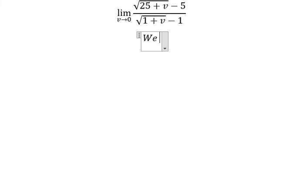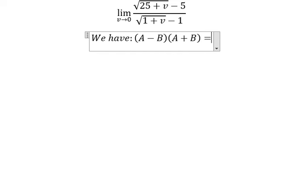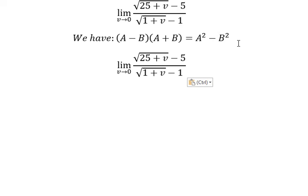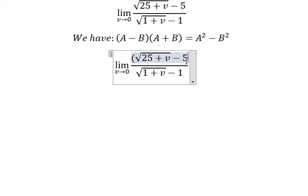We have the formula: A minus B multiplied by A plus B equals A squared minus B squared. If we look carefully at this, that's A and that's B. We need to create A squared minus B squared because the power of two can cancel the square root. That's why we need to create A squared minus B squared.